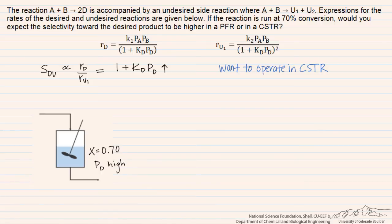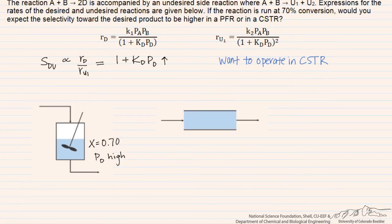Whereas in a PFR, we're initially going to start off at a conversion of 0%, and gradually go up to a conversion of 70%, and the reactor will operate at all conversions in between that.